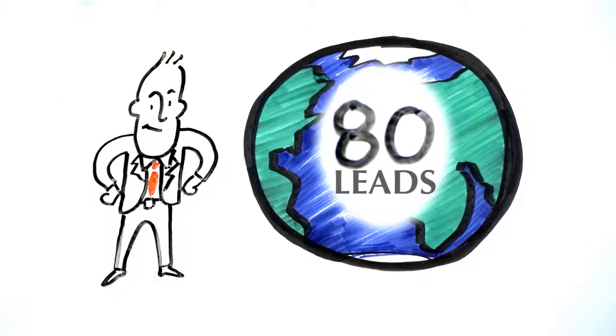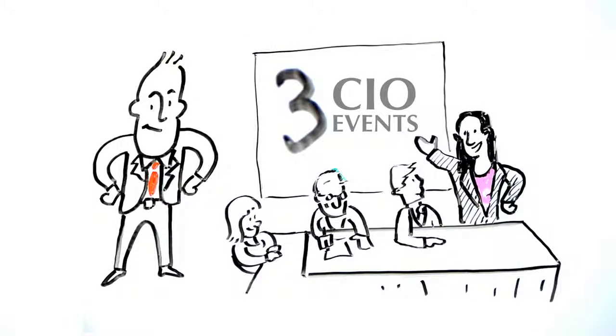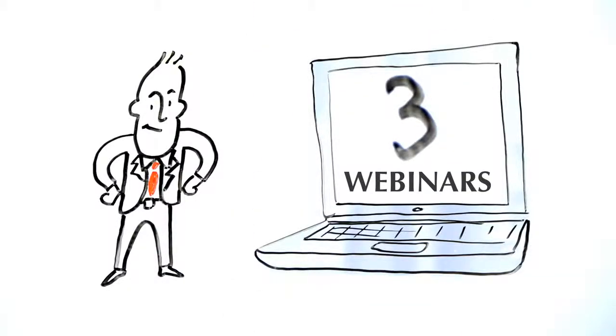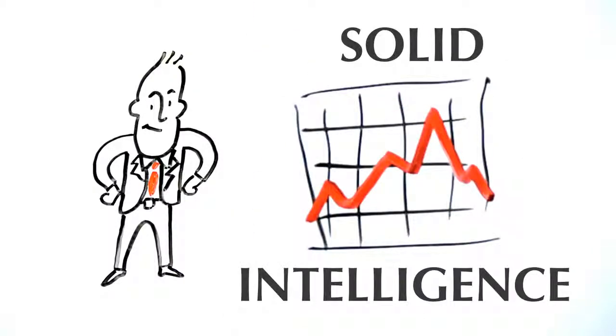In the span of three months, Bob had over 80 leads across the globe, three CIO roundtable events planned, three webinars executed, and had received solid intelligence on his named and existing accounts.